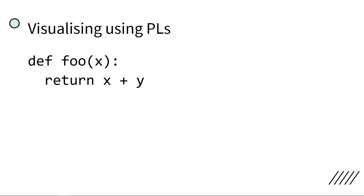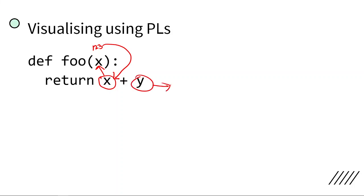Which variables are connected to the input variable? As you can see here, x is connected here. So if we pass 1, 2, or 3 as the parameter of our function foo, that value will be substituted for x. However, y is a free variable.